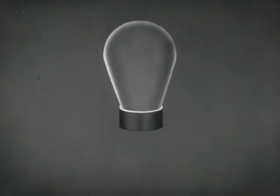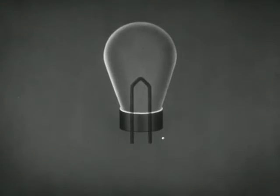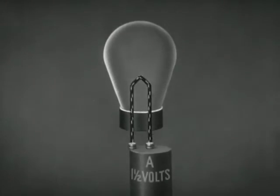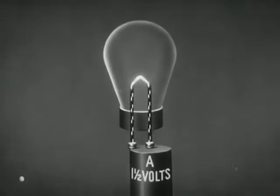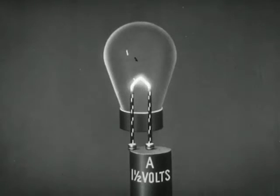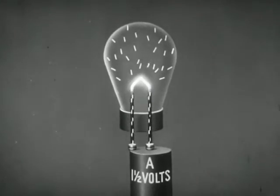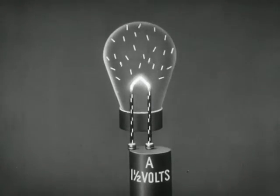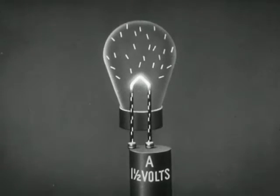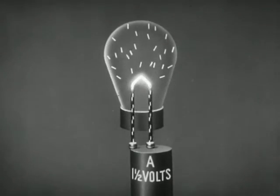First, let us consider how a three-element vacuum tube, the triode, operates. A tungsten filament extends into a tube such as this. A cell supplies a current which heats the filament. When the filament gets hot enough, electrons are emitted. The electrons build up a space charge in the tube. As the charge builds up, electrons are repelled back to the filament, and finally as many return as leave.